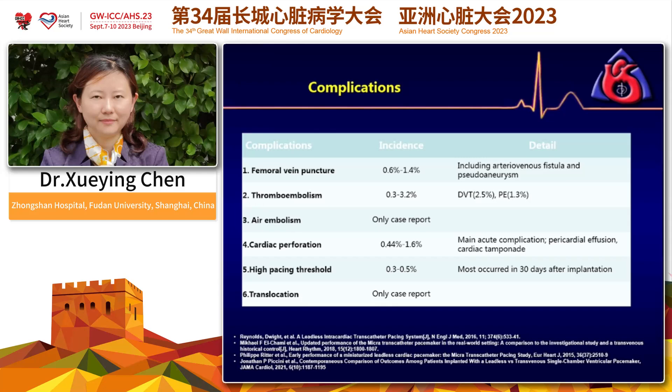Similarly to conventional pacemakers, high pacing threshold may require a generator change. For Micra, the incidence is around 0.5%, and it most often occurs in the 30 days after implantation. Other very rare complications include air embolism and translocation — there are only some case reports, so these are not very common.